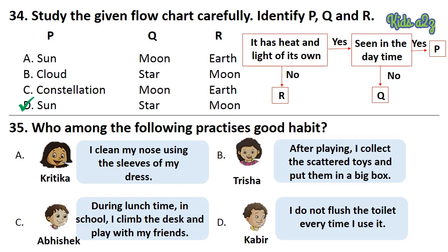Question 35: Who among the following practices good habits? The answer is Option B — that is, Trisha. That's all for now. If you like this video, please subscribe to Kids A to Z for more worksheets and learning videos. Thanks for watching Kids A to Z. I'll see you next time.